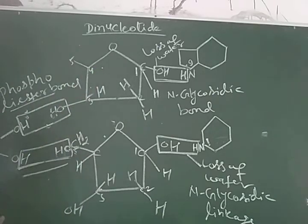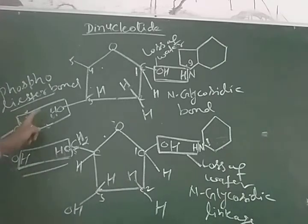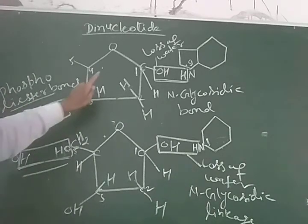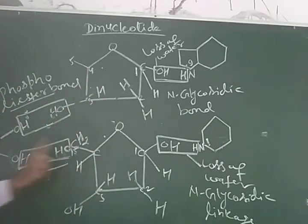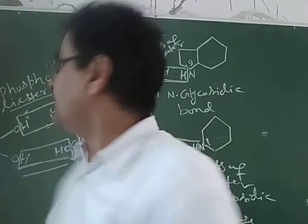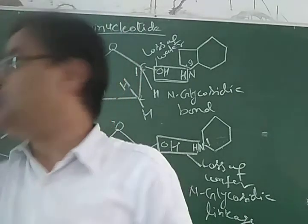So, this phosphodiester bond means that in a dinucleotide, the two nucleosides are attached together by the phosphate, which takes part in the formation of the phosphodiester bond with the third carbon of one sugar and the fifth carbon of another sugar. In the last video we learned about the nucleotide, and today we learned about the dinucleotide. Thank you.